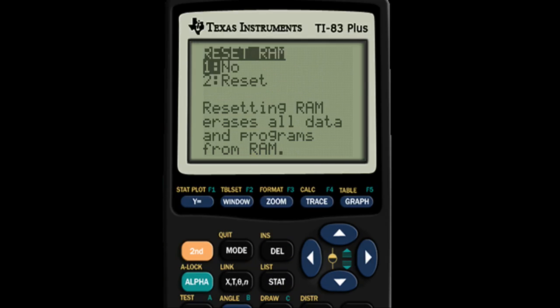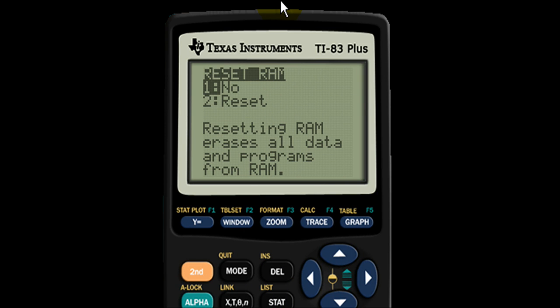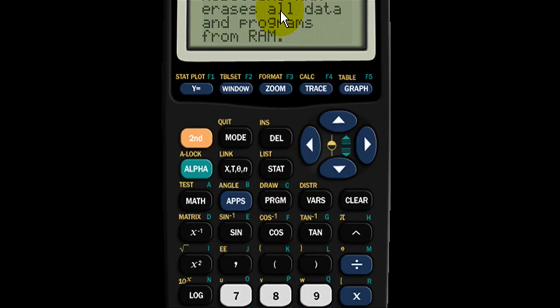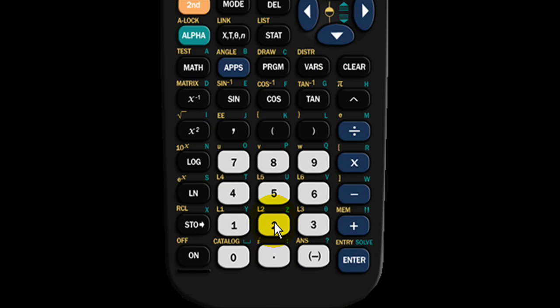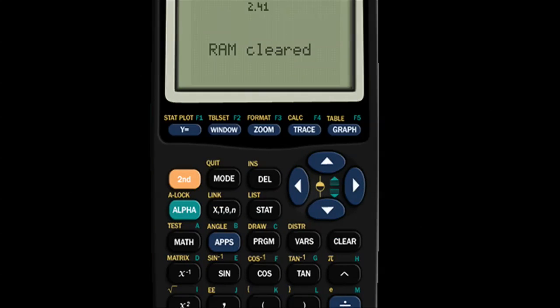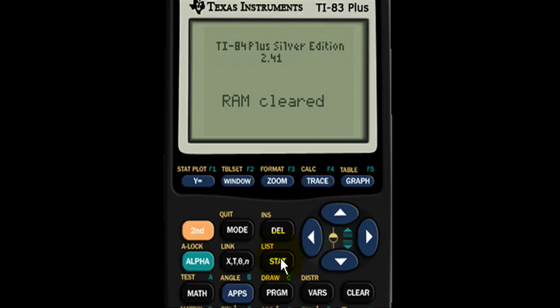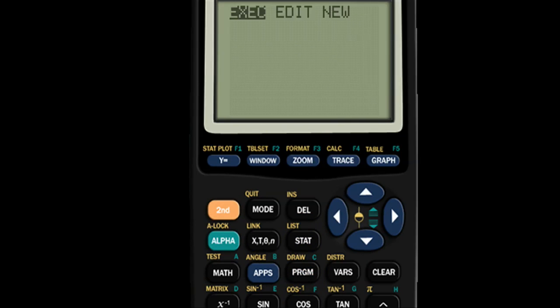So the information that we just stored was stored through a program because we clicked the program key. Therefore when you delete the RAM the information that we stored in the program will also be deleted. That's the problem with RAM deleting and resetting. So when I hit two it'll say RAM cleared.